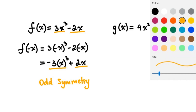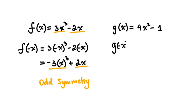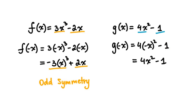Next, let's test g of x. If I substitute negative x into this equation, we still get 4x squared minus 1 — both terms remain exactly the same as they were originally. So if you substitute negative x into the equation and the signs of each term do not change, then this is an even symmetry. If one term changes sign and the other does not change sign within the same equation, then the symmetry is neither odd nor even.